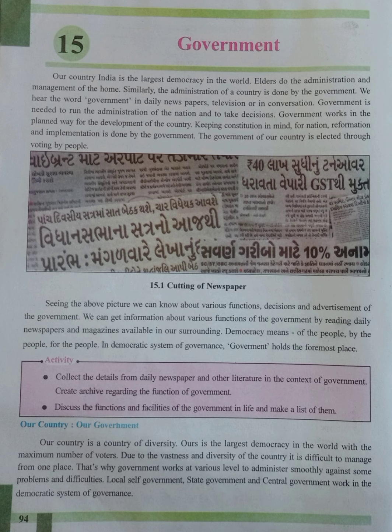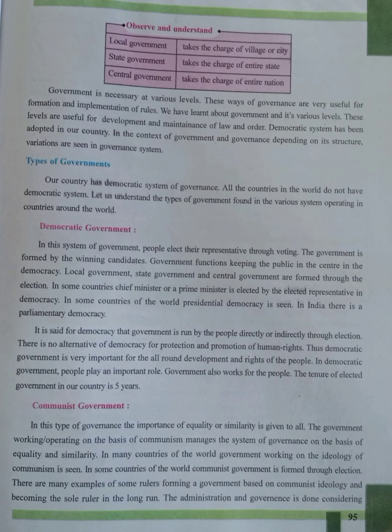Many problems will arise in managing the country from one place, and citizens will have to suffer difficulties. It is not possible to administer from one place in India. So the government works at various levels in order to administer the country smoothly and better against these problems. Local government takes charge of the village or city, state government takes charge of the entire state, and central government takes charge of the entire nation.